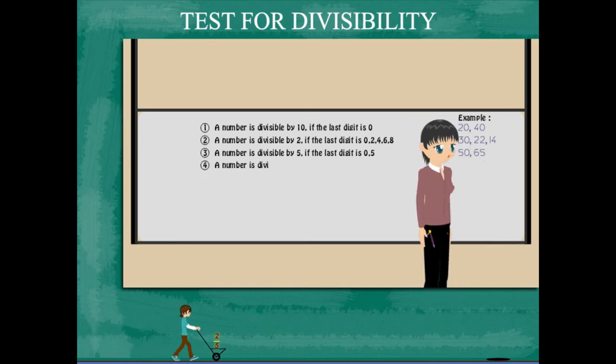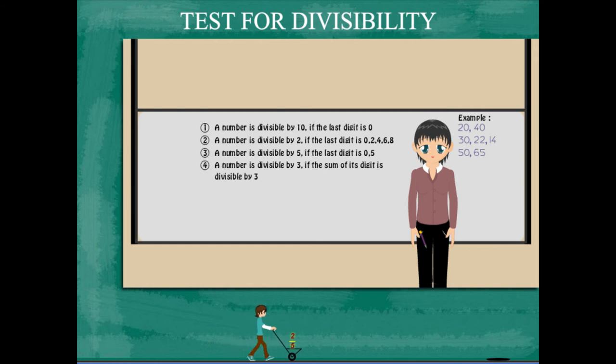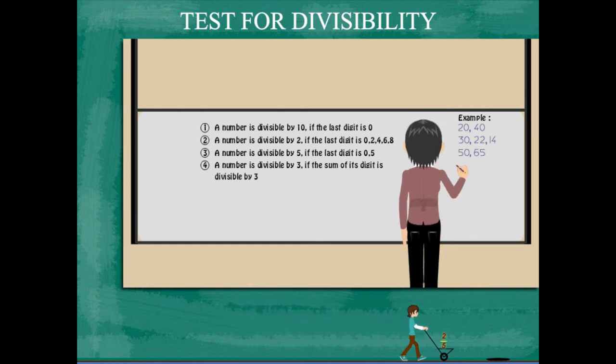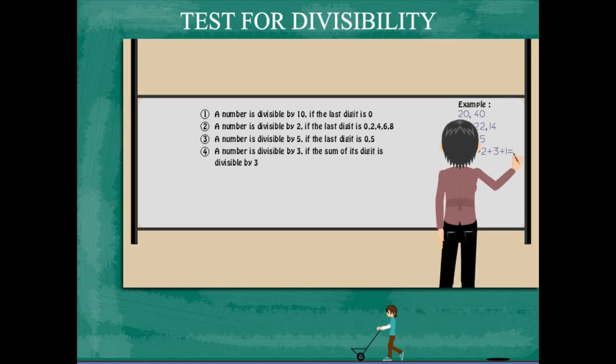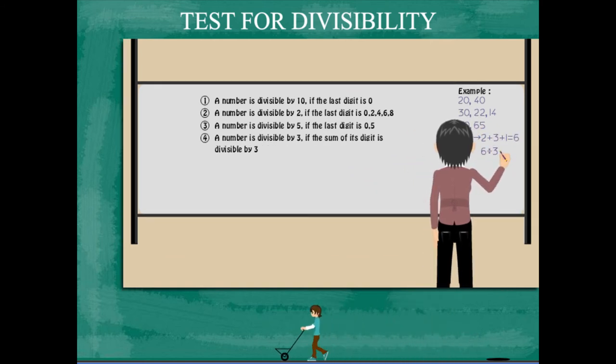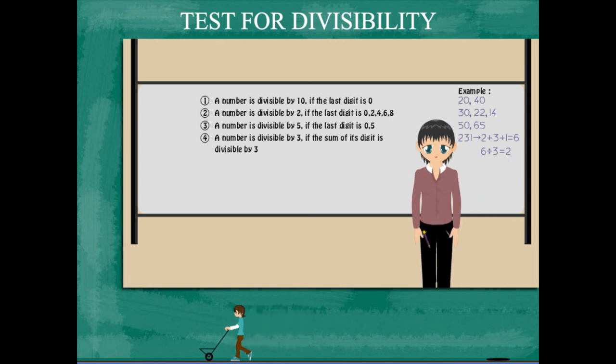For example, 50 and 65. A number is divisible by 3 if the sum of its digits is divisible by 3. For example, 231 adds up to 6, and 3 divides 6 two times.